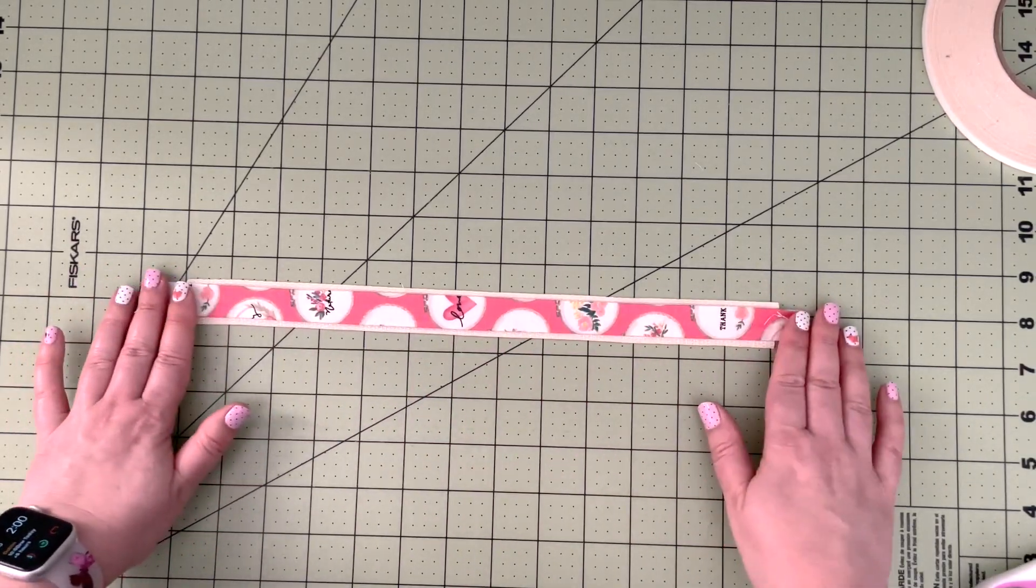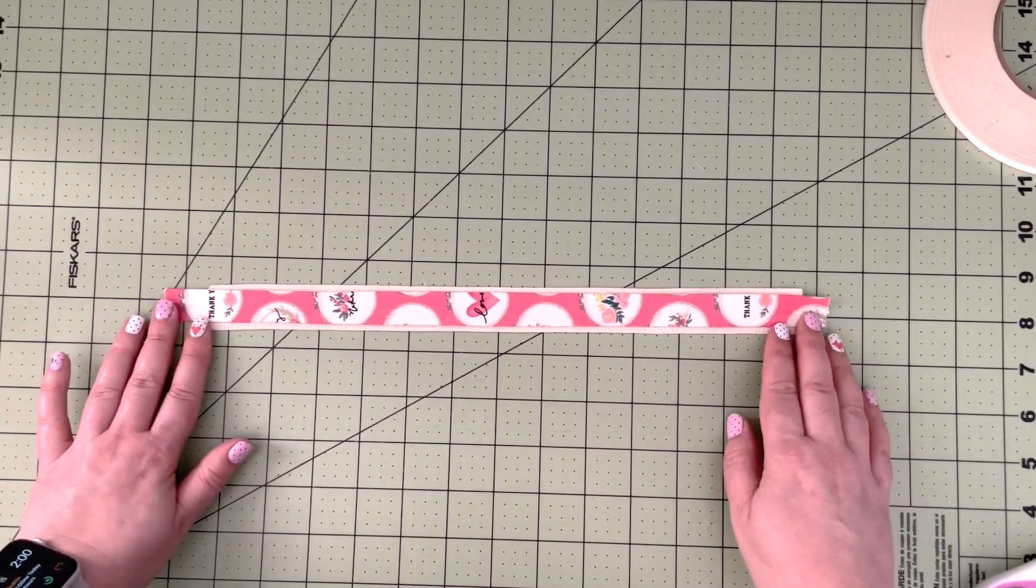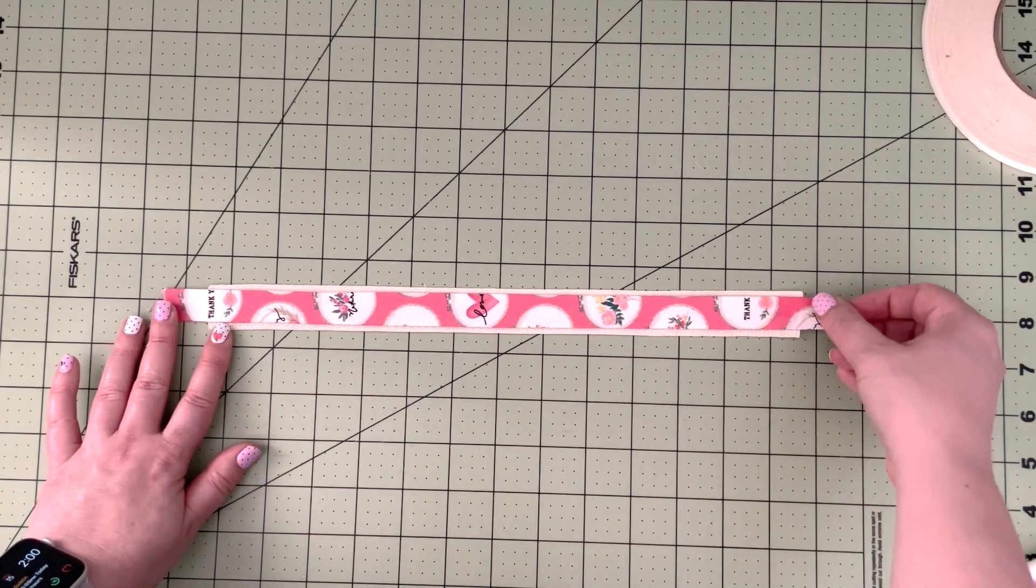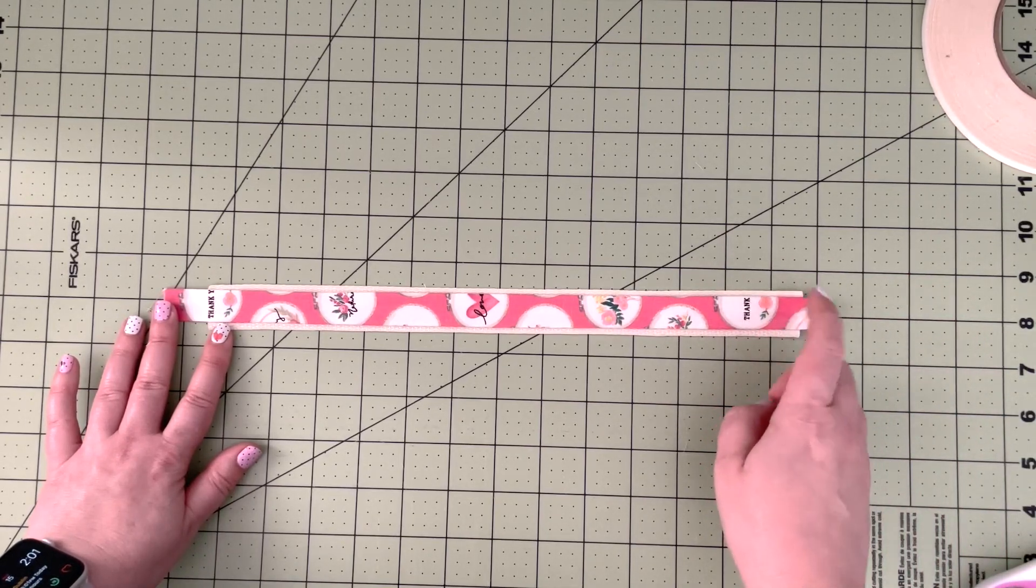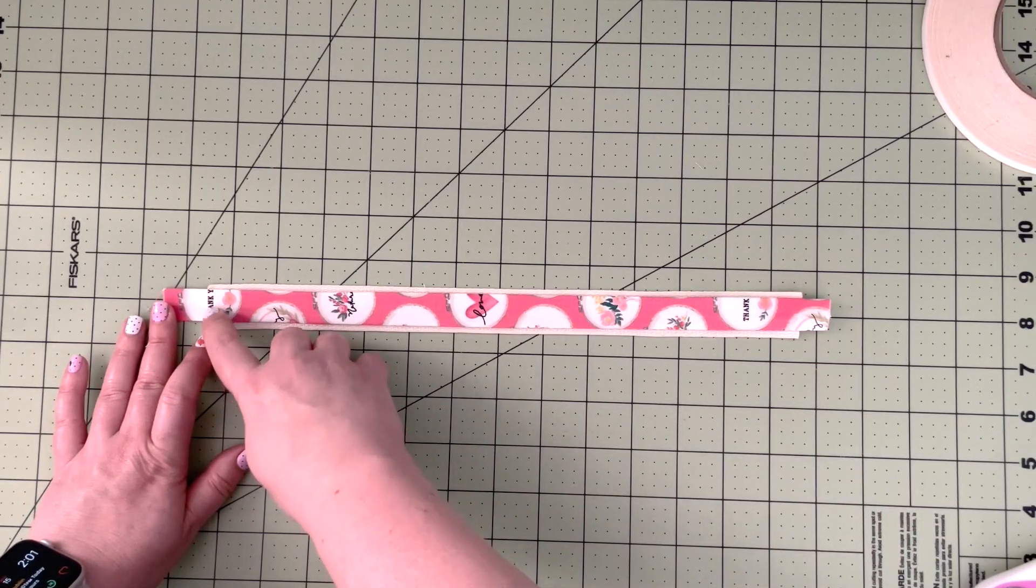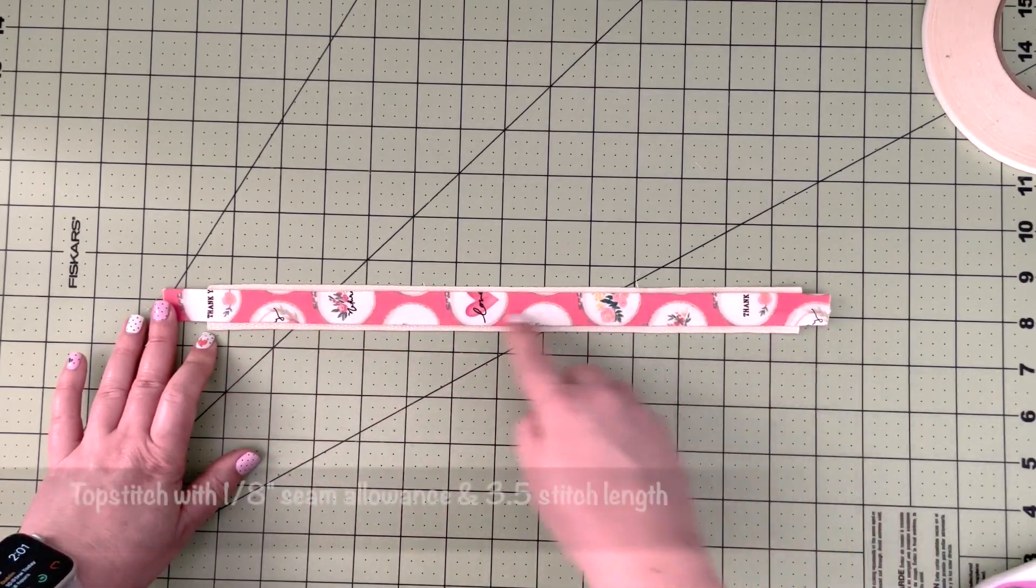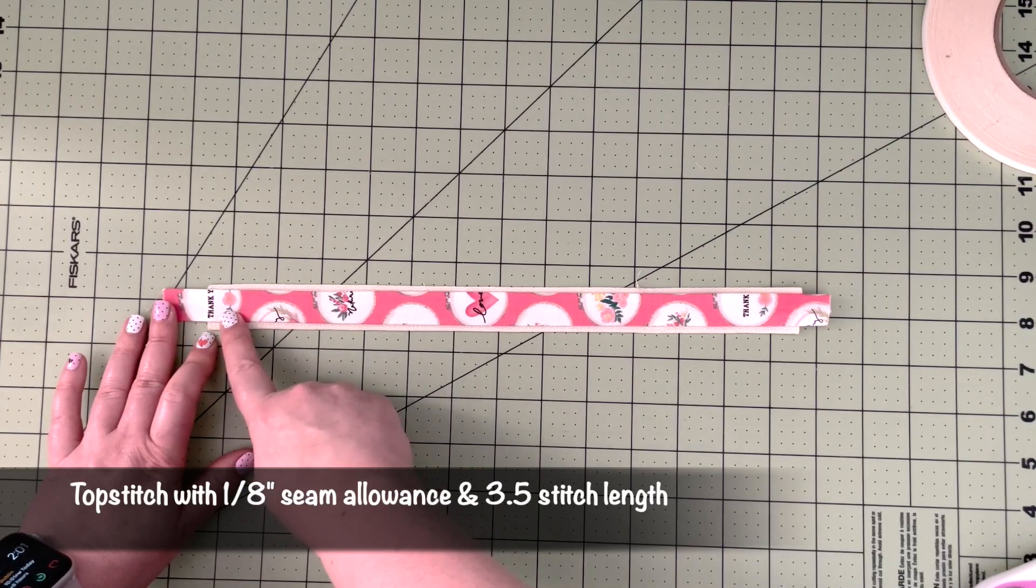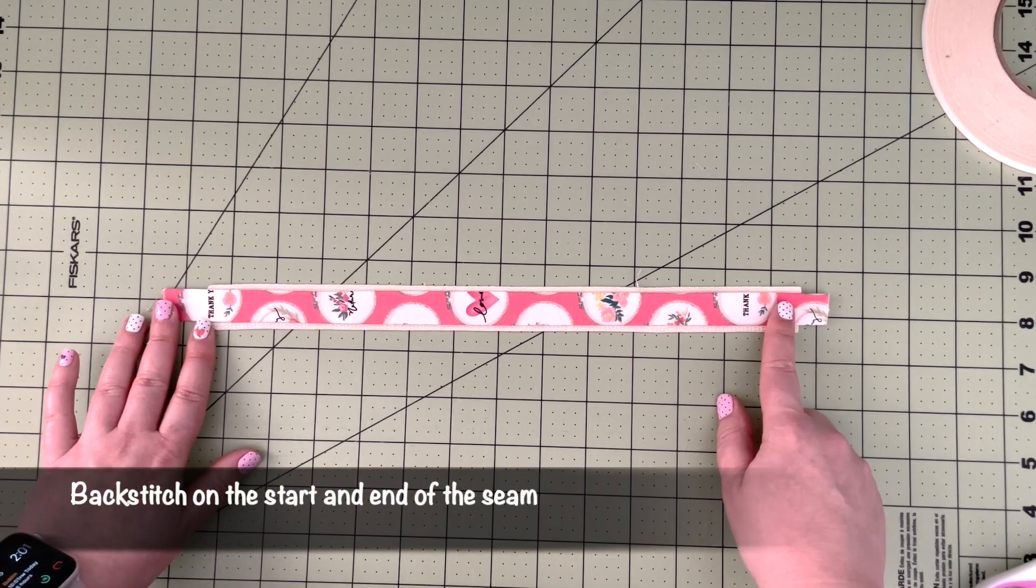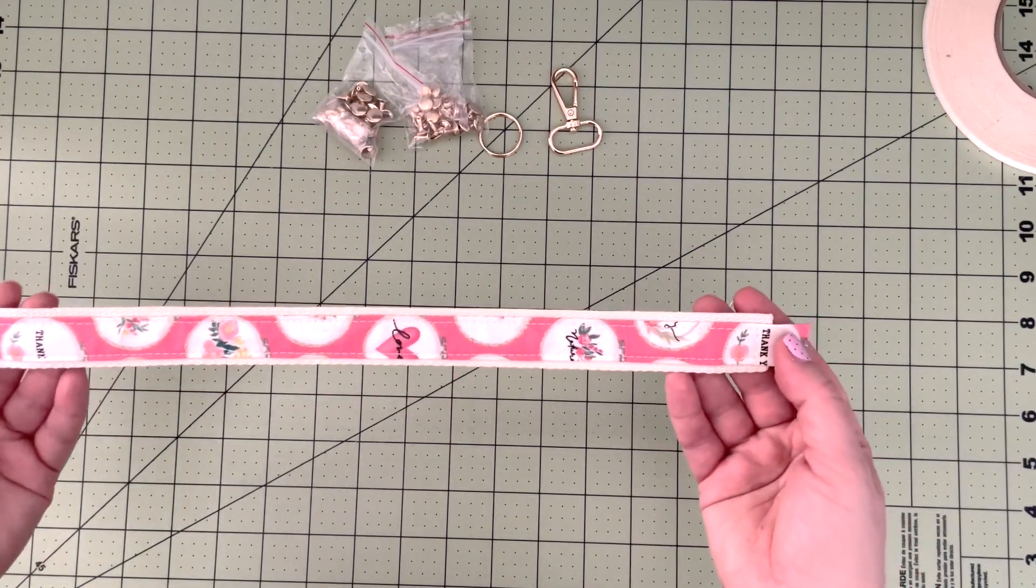When you have the webbing tape prepped with your accent fabric, now you're going to take it to the machine and top stitch along those two long edges. Come back where your webbing tape ends and do another top stitch along the long edge and come back, so you want to create a full rectangular shape onto your webbing tape attaching the accent fabric. Use a 1/8 inch seam allowance and 3.5 stitch length.